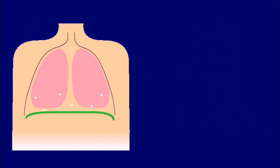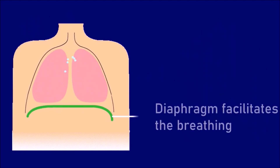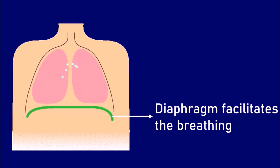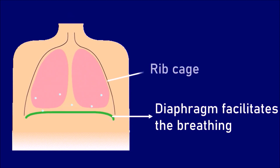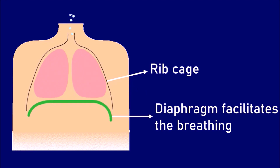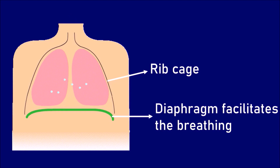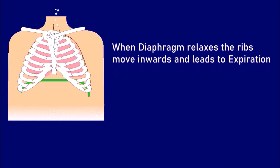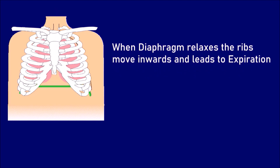This is how the movement of the diaphragm facilitates breathing. You can also observe the movement of the ribcage facilitating breathing. The ribs are attached at an angle and also attached to the diaphragm with a tendon. When the diaphragm relaxes, the ribs move inwards and this leads to expiration.